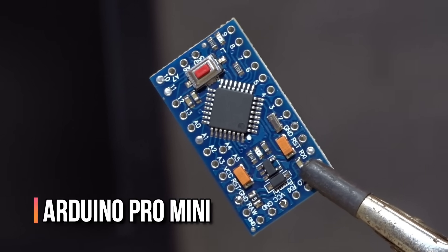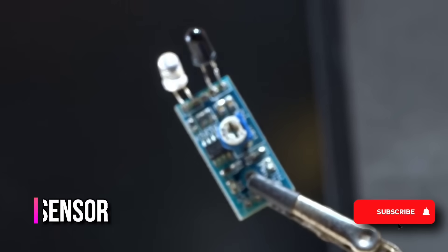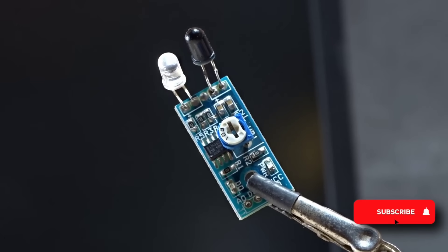Arduino Pro Mini, the brain of the system. One IR sensor for motion or object detection.